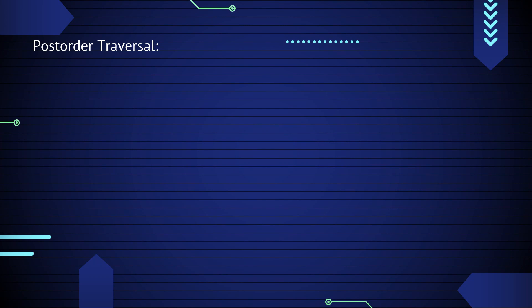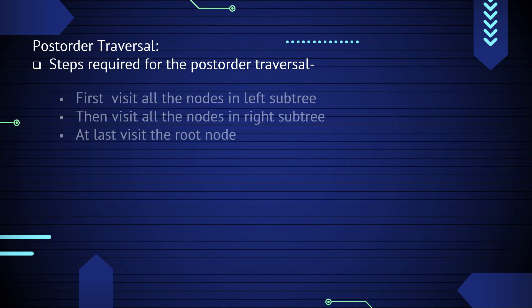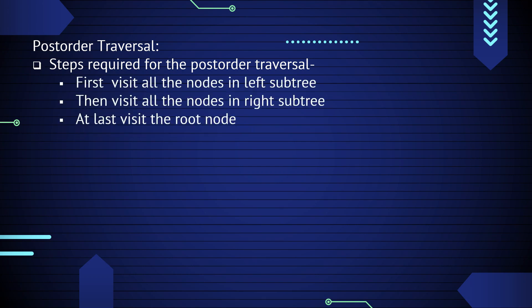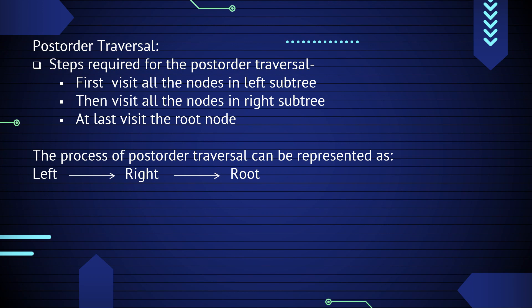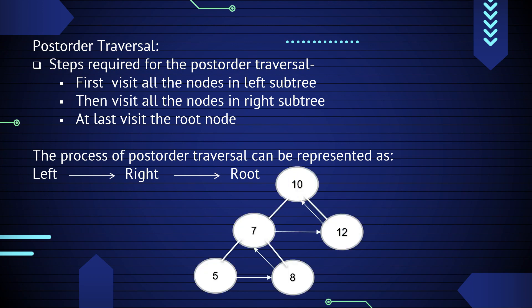The last type is post-order traversal. The steps required for post-order traversal are: first visit all nodes in the left subtree, then visit all nodes in the right subtree, and at last visit the root node.